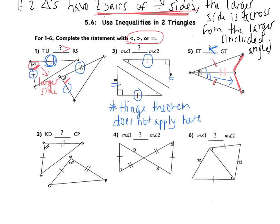Pause the video and try example two on your own. Does the hinge theorem apply? I have one pair of congruent sides and another pair of congruent sides. Now I can look at their included angles: 115 and 125. So CP is going to be the bigger side — 125 is bigger — meaning KD is going to be smaller than CP.